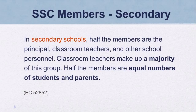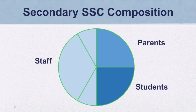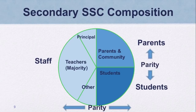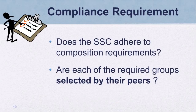What is different in secondary is that half the members are equal numbers of students and parents. There must be parity or equal numbers on both sides, and there must also be equal numbers of parents and community members and students. In other words, secondary SSCs require two levels of parity. Adherence to each of the secondary requirements results in a 12-member minimum SSC. During a compliance review, federal program monitors from the California Department of Education ask two important questions: Does the school site council adhere to the composition requirements? And, are each of the required groups selected by their peers?